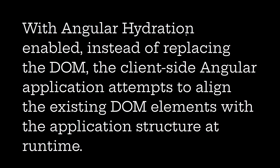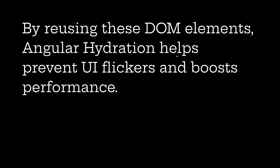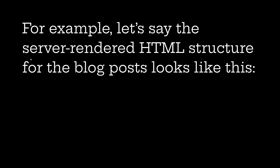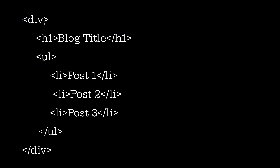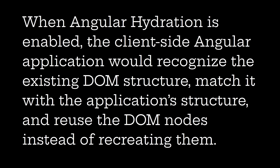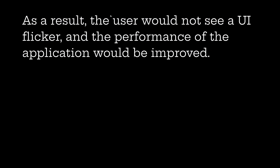With Angular hydration enabled, instead of replacing the DOM, the client-side Angular application attempts to align existing DOM elements with the application structure at runtime. It recognizes the existing DOM structure, matches it with the application structure, and reuses the DOM nodes instead of recreating them. For example, a server-rendered HTML structure with a div, h1 title, and ul with post items would be reused as-is. As a result, the user sees no UI flicker and application performance is improved.